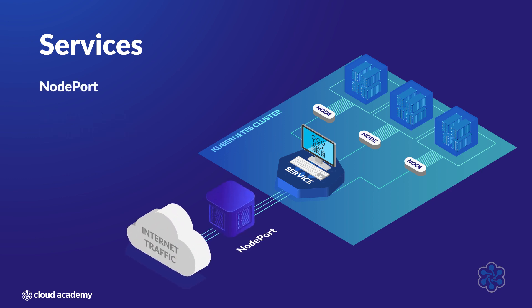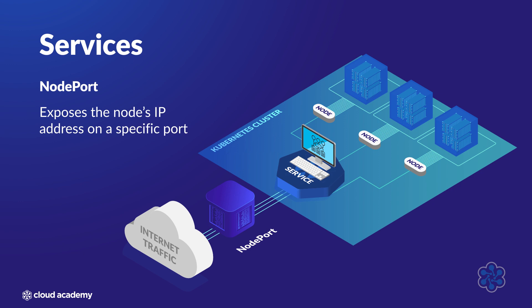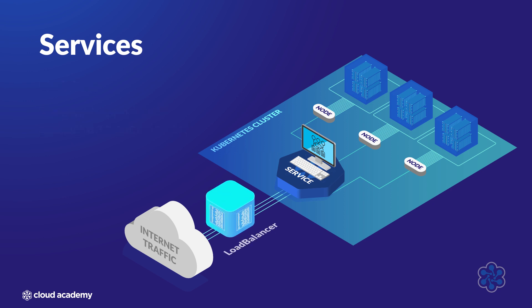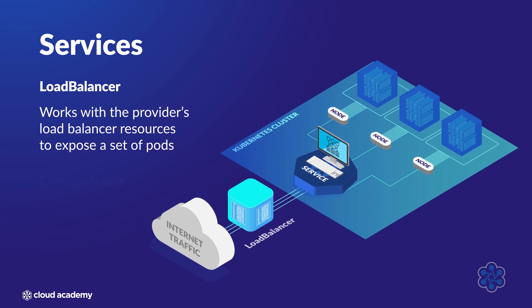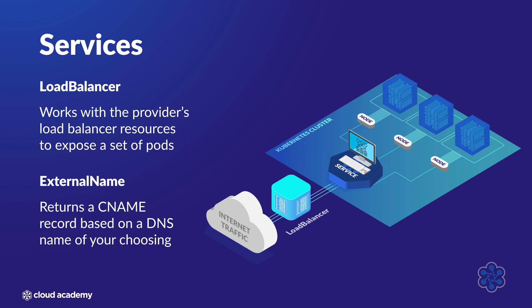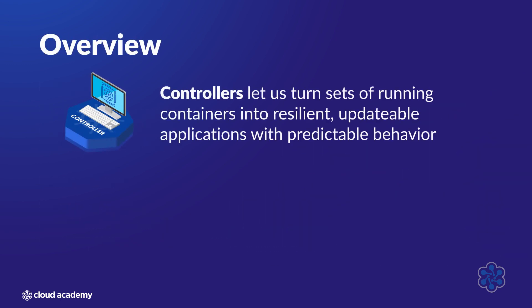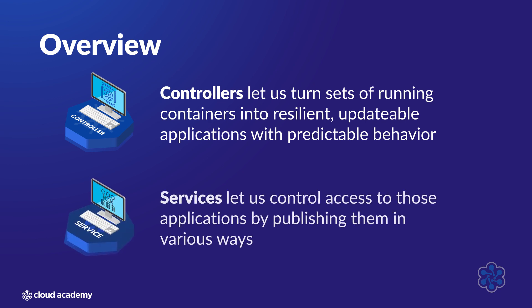Node port services expose the node's IP address on a specific port. Depending on your firewall setup, you may not want your Kubernetes nodes — the actual VMs — to expose their IP addresses, even on a specific port. You also have load balancer and external name services, both of which work more closely with your cloud provider. The load balancer works with your provider's load balancer resources to expose a set of pods, while the external name type returns a CNAME record based on a DNS name of your choosing. Controllers let us turn sets of running containers into resilient, updatable applications with predictable behavior, and services let us control access to those applications by publishing them in various ways.